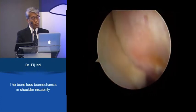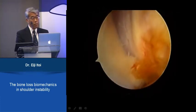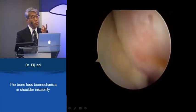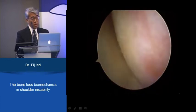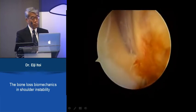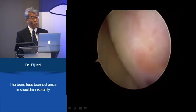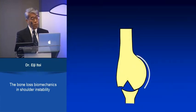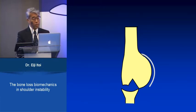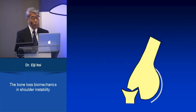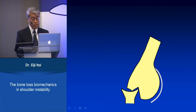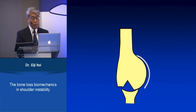After the Bankart repair, the shoulder is stable and doesn't shift anteriorly, so that Hill-Sax lesion does nothing to instability — it is not a true engaging Hill-Sax lesion. The true engaging lesion is one that engages and dislocates even after the Bankart repair. Looking at the literature, almost all investigators perform this dynamic examination before the Bankart repair, and as a result, one-third to nearly one-half of patients showed an engaging Hill-Sax lesion and underwent remplissage. This is obviously an overtreatment.